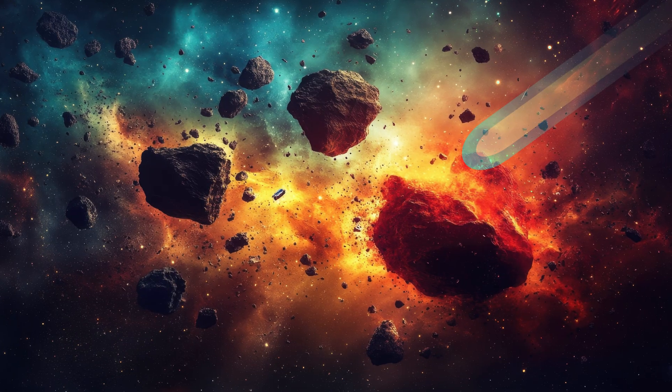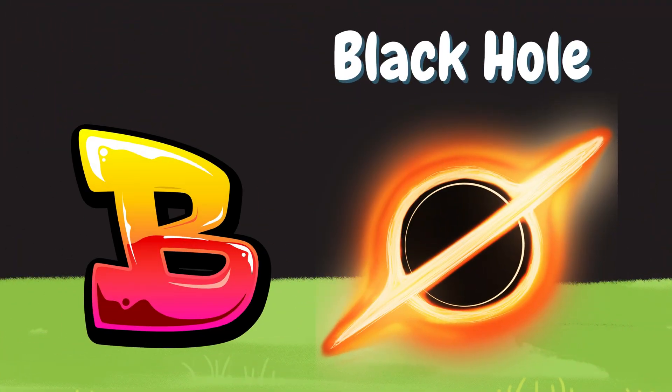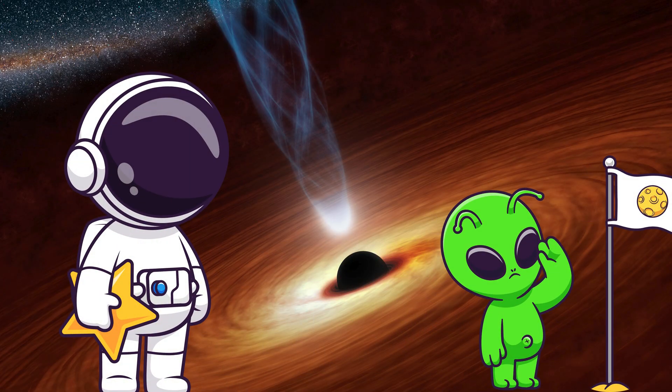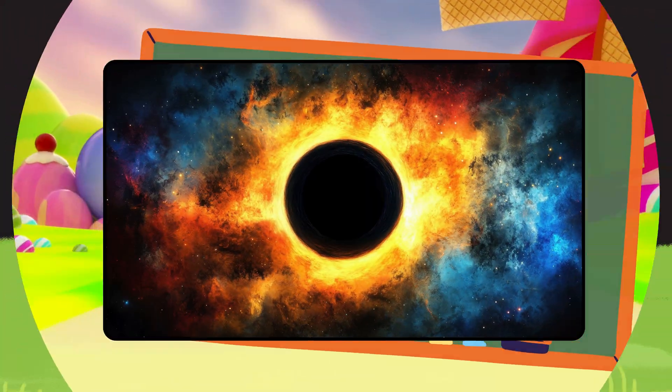A is for asteroid. Asteroids zoom around space like rocky racers. B is for black hole. Black holes slurp light like giant space vacuums.